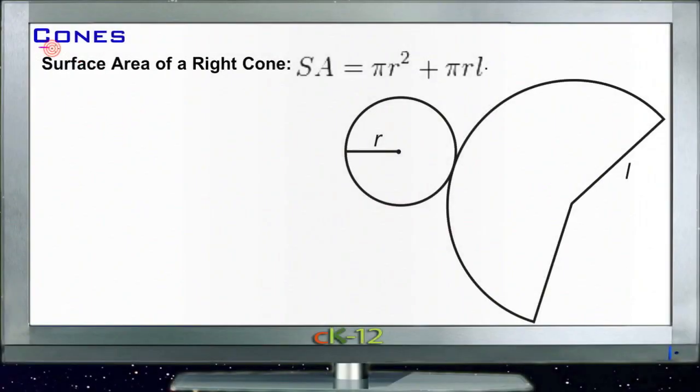Our next lesson is on cones. Cones are just like pyramids except they're round on the base instead of having a multi-sided base—square, pentagonal, whatever it happens to be. After having that round base, they come to a point above it, just like a pyramid did, but instead of having a base with a bunch of sides, it's just round on the bottom.